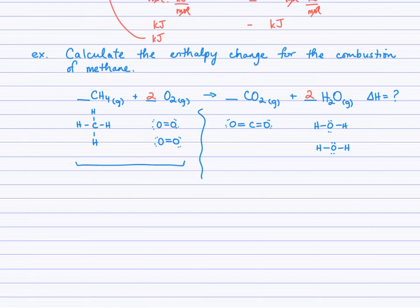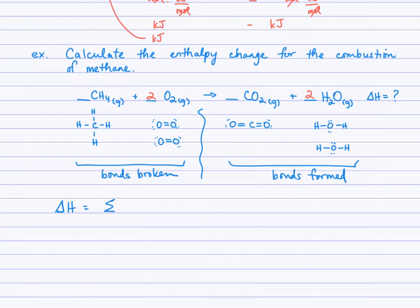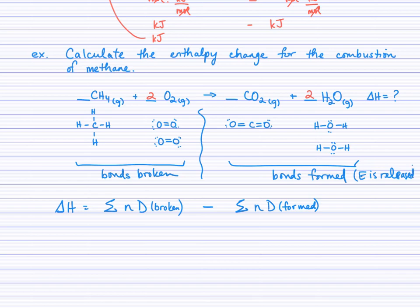On the left side, this is where bonds need to be broken, and on the right side, this is where bonds are going to be formed. That ties into the formula: we take the sum of moles times bond dissociation energy for bonds being broken, and subtract the sum for bonds being formed. Why the subtraction? Because when bonds are formed, energy is released — that release is negative. So instead of adding a negative, we subtract, allowing us to read the values of D right off the table as positive numbers.